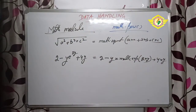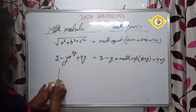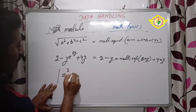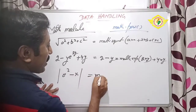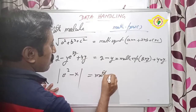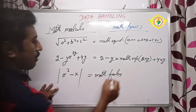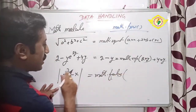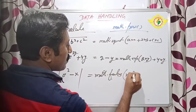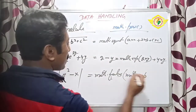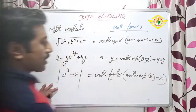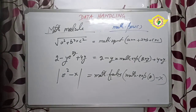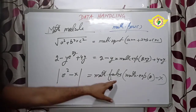Take one more example - suppose it is given absolute value of e to the power (2 minus x). The absolute value means you can write math.fabs, after that inside the bracket you write math.exp(2 minus x bracket close). In this way we can write the exp value and the absolute value that is fabs.